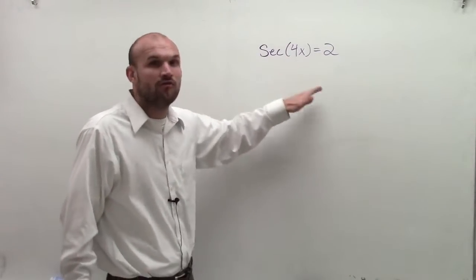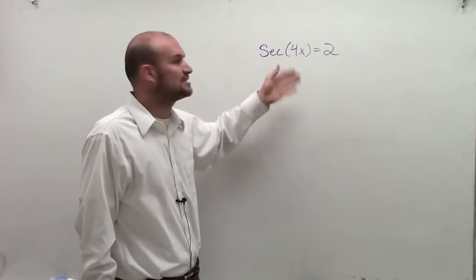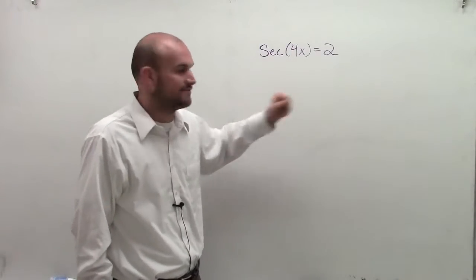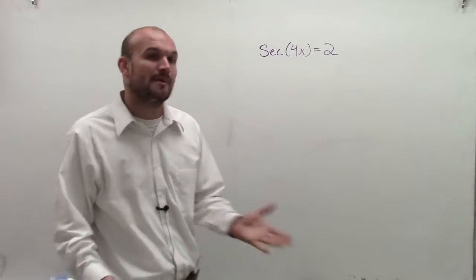But we have a problem here - we have 4 times our variable. We can't undo the 4 until we actually evaluate for our secant function. So the first thing I need to do here is determine what is the value of my secant.